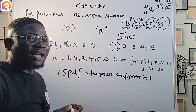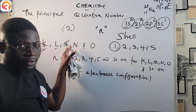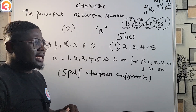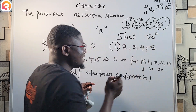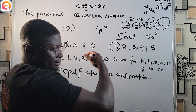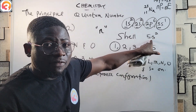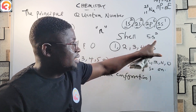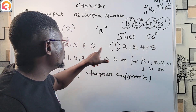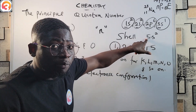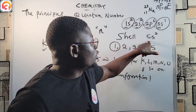For example, if an atom has 5s² as its outermost shell after writing the electronic configuration, it is in the fifth principal quantum number. Counting the shells — K is 1, L is 2, M is 3, N is 4, O is 5 — so it belongs to the O shell.